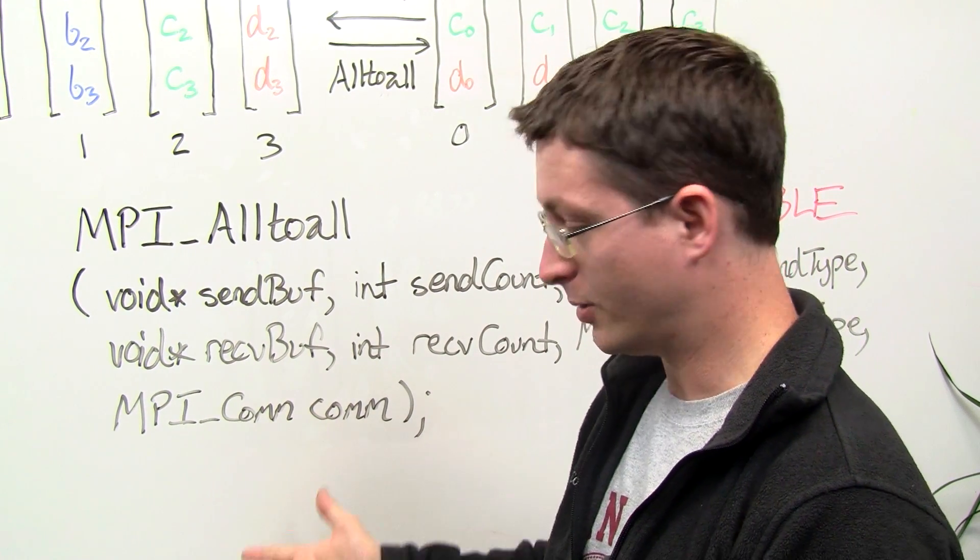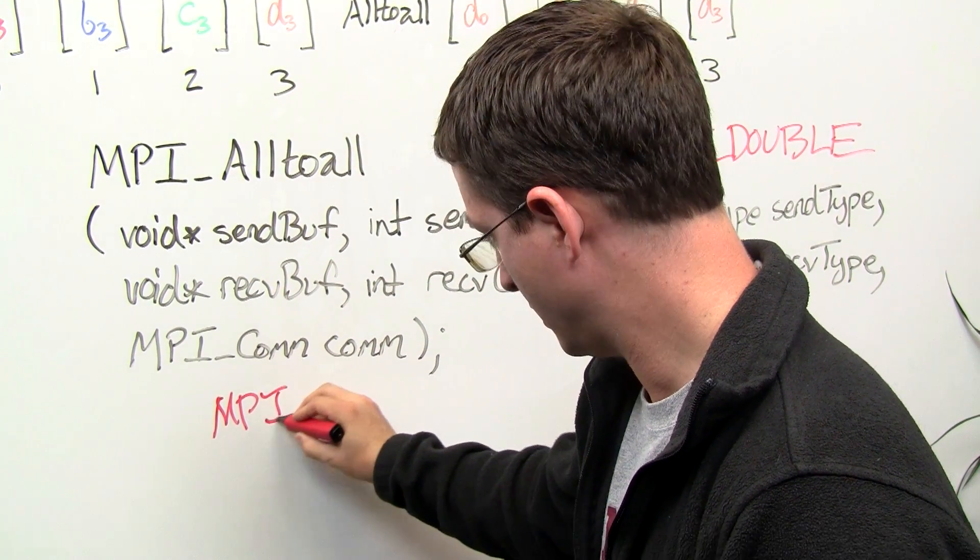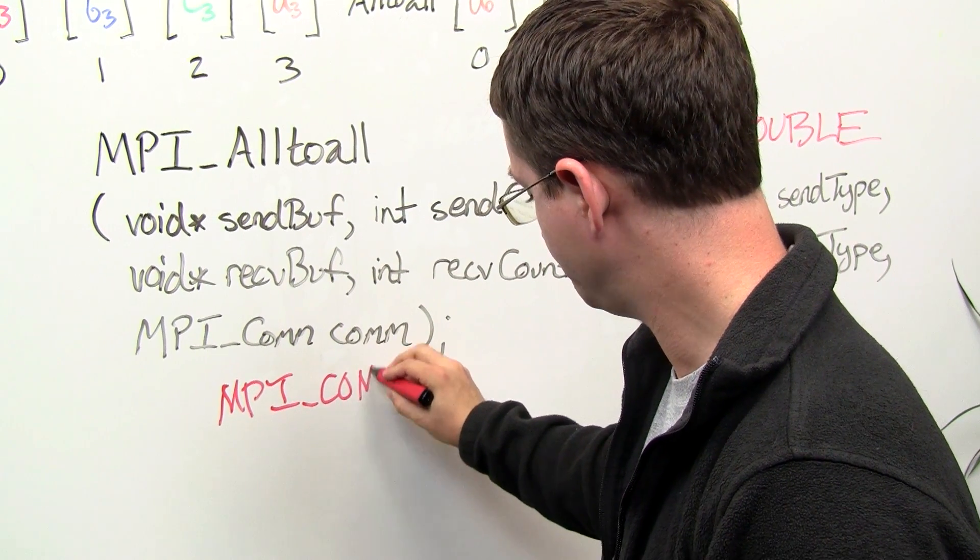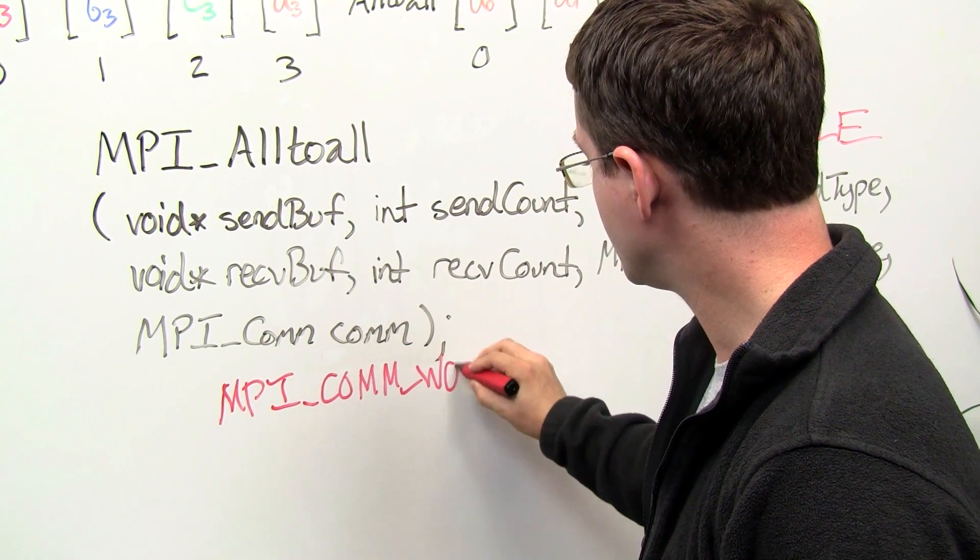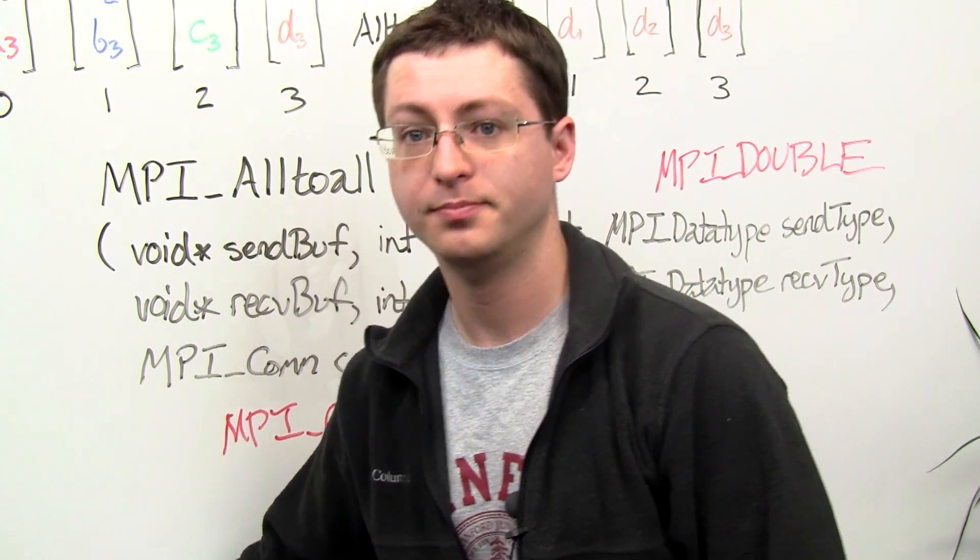Now I'm not going to go into what a communicator is right now, but if you don't know what it is then you should just use MPI comm world, which is always defined and it represents the entire set of processes that you launched your job with. Thanks.